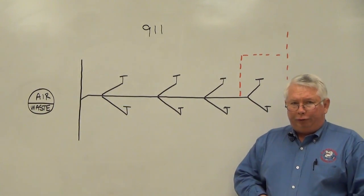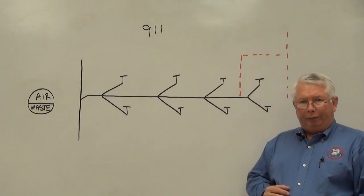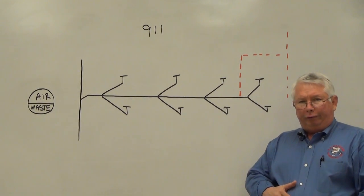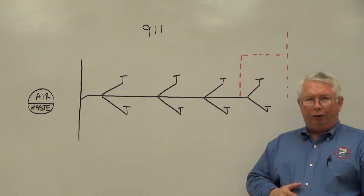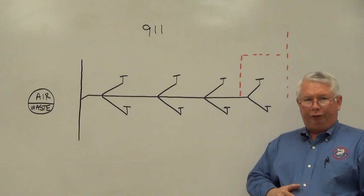The horizontal branch drain receives the discharge from the fixtures and part of the requirement of the circuit vented horizontal branch drain is for the fixtures to enter horizontally into the horizontal branch drain.